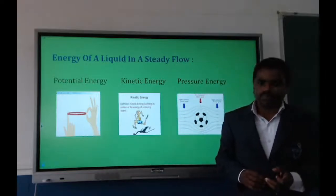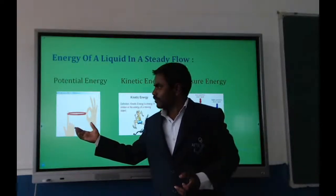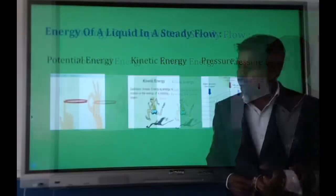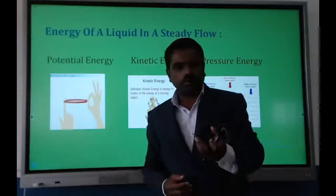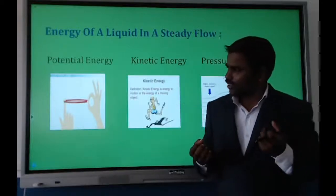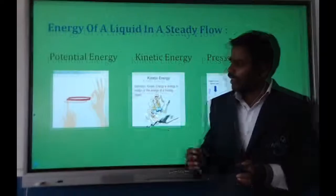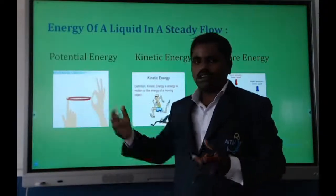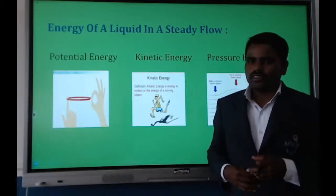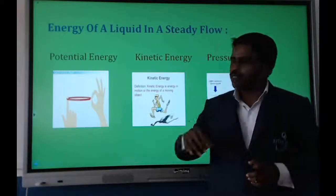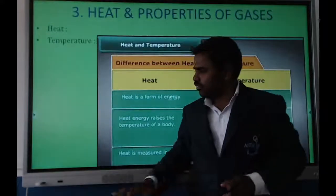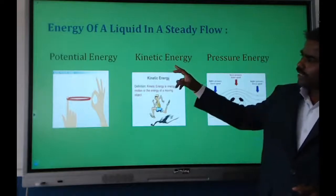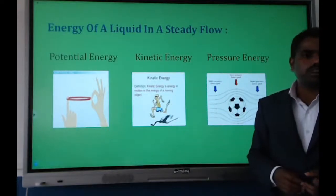Potential energy is the energy gained by an object due to its structure and height. For example, stretching a rubber band stores potential energy, and a rock on a hill has potential energy — if pushed, it will fall due to that energy. Kinetic energy is the energy gained by a moving object.